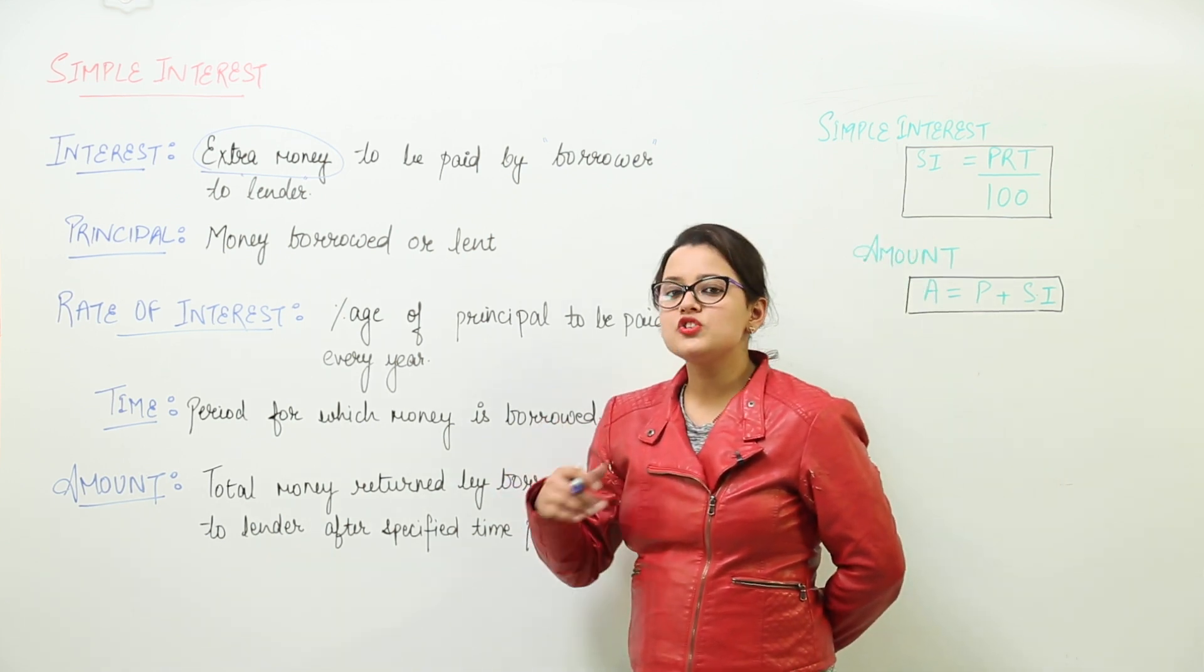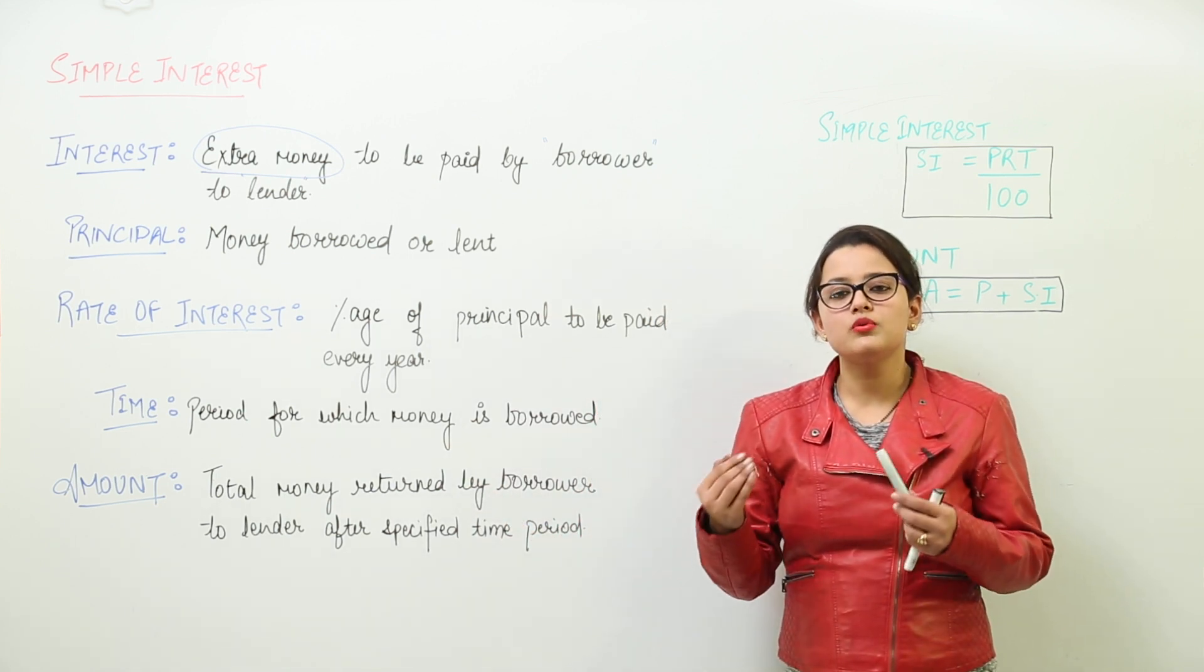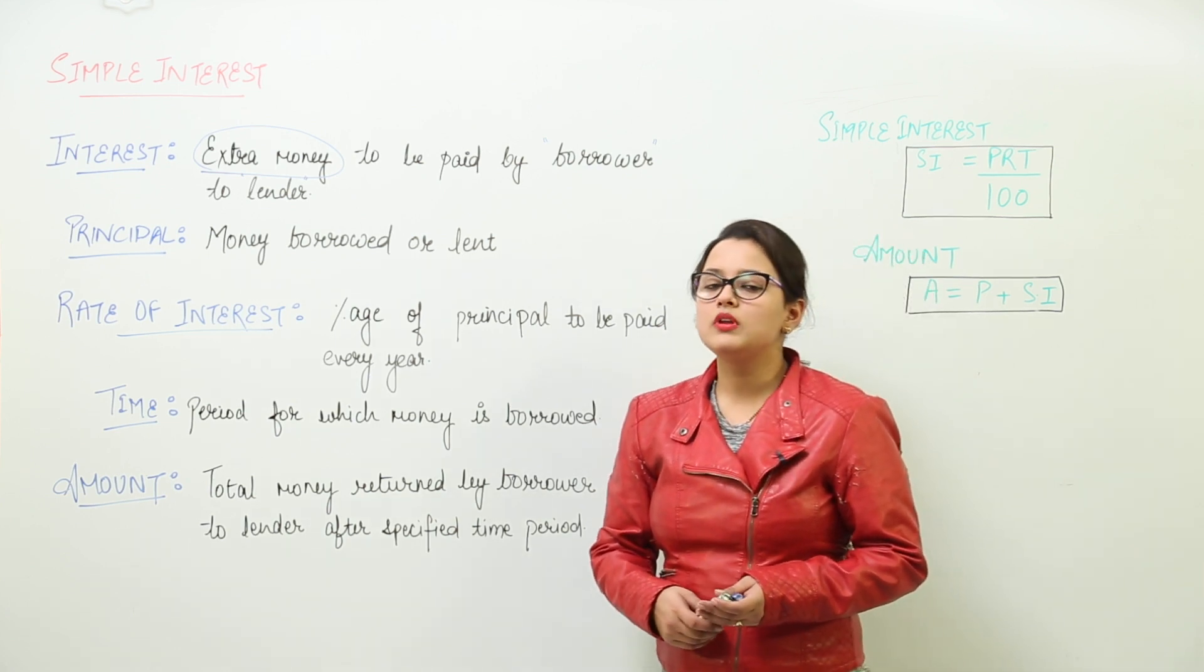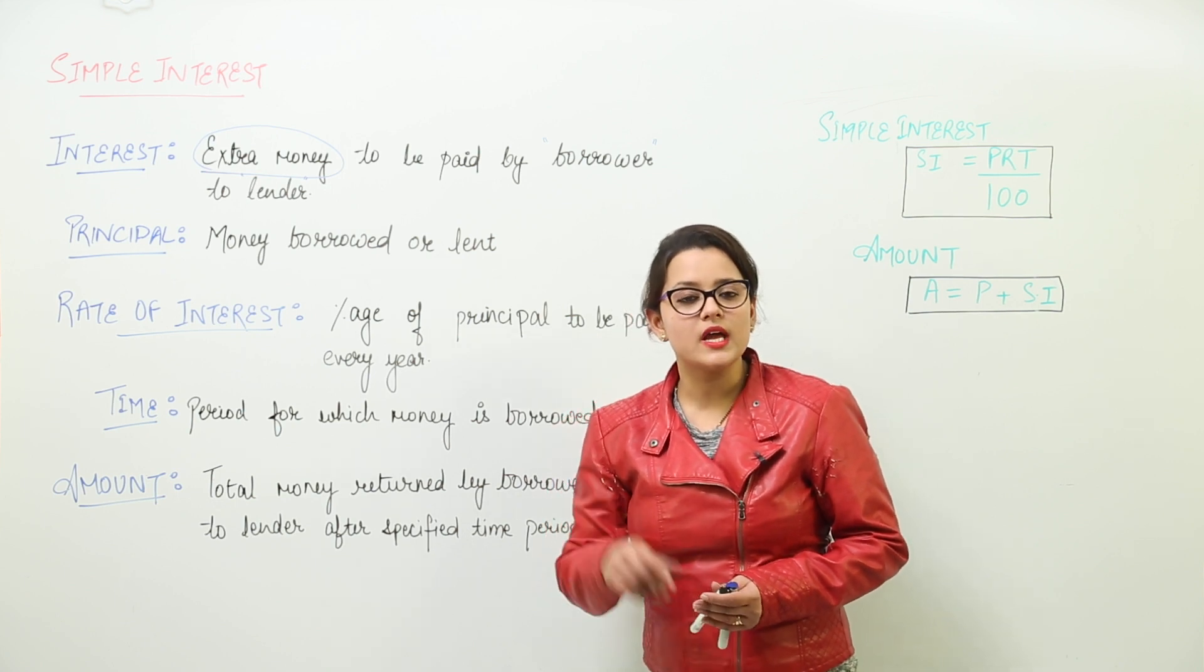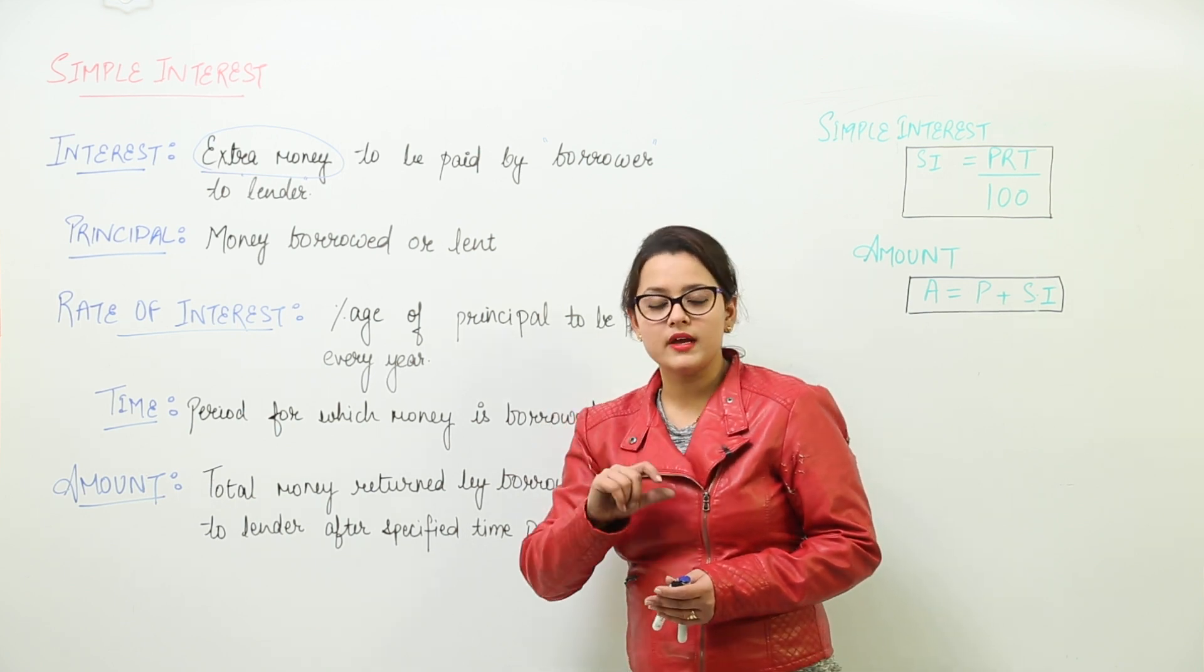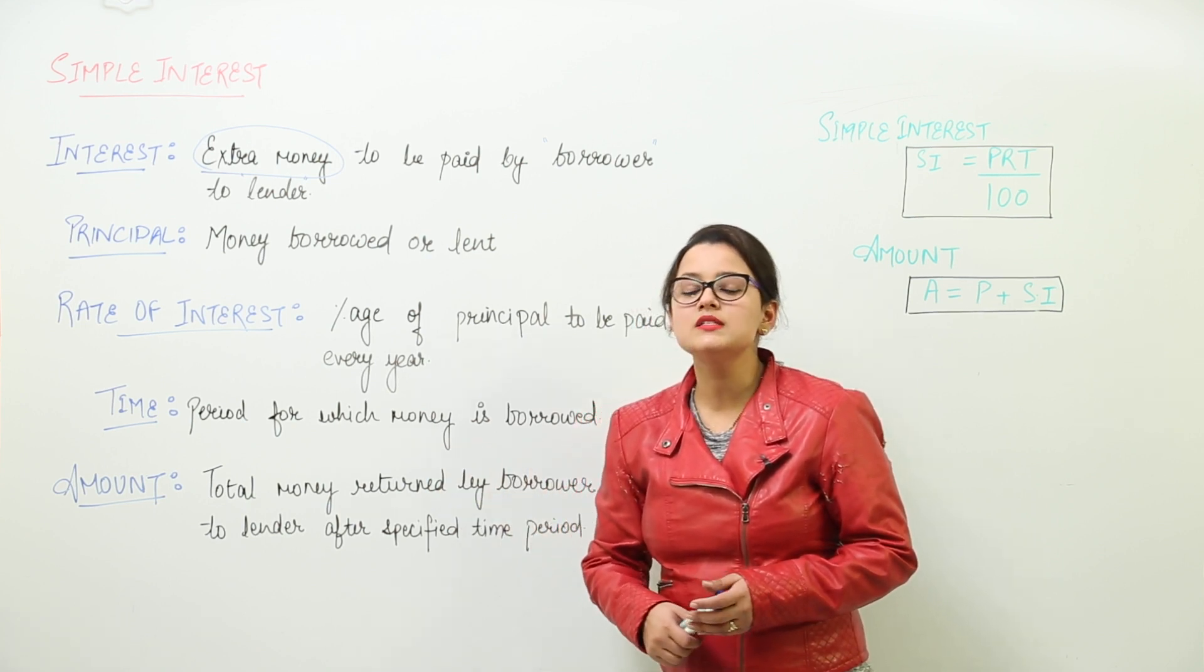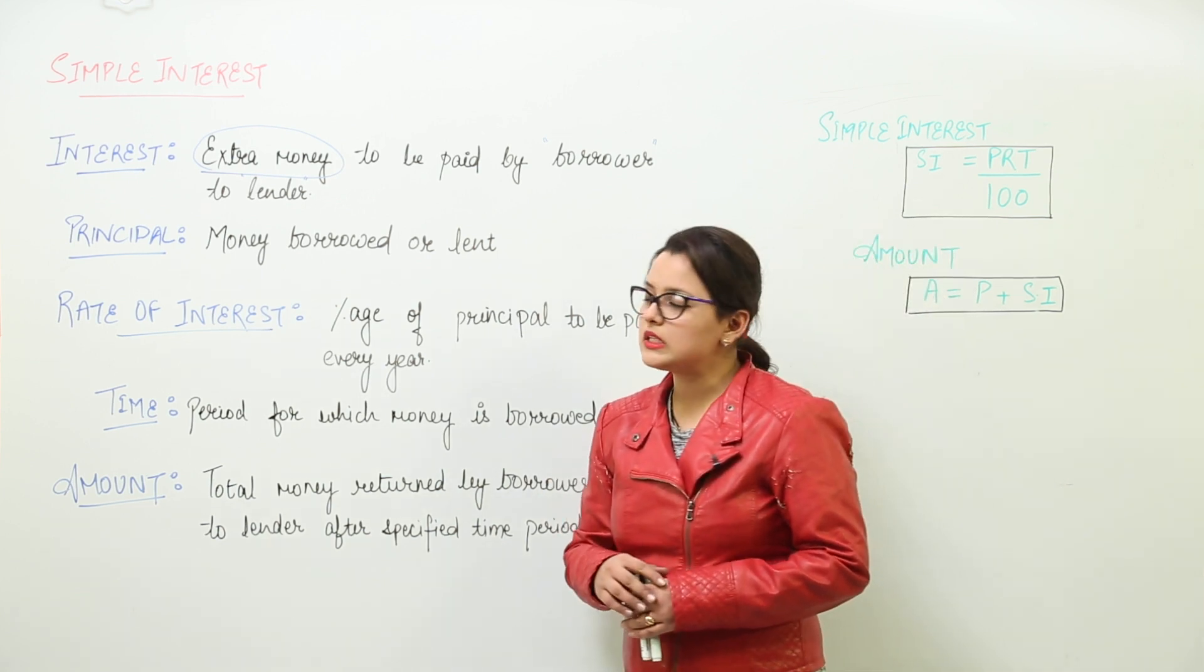So how much extra money? For example, she tells me that okay, I am ready to lend you 100 rupees, but in return, whenever you are returning me, you will have to give me back 110 rupees. So what is the extra amount of money? I will be paying her back or what is she wanting me to pay back is rupees 10. So 10 rupees is the interest on this.